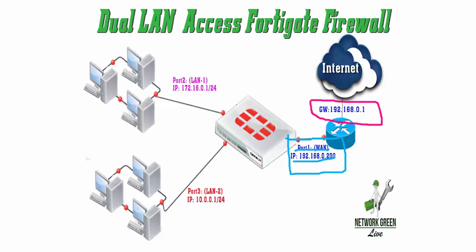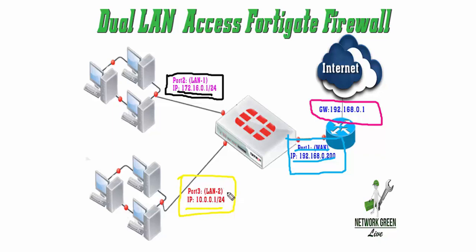On port 2 we have LAN 1 configured — that's the IP 172.16.0.1/24. On port 3 we have LAN 2, IP is 10.0.0.1/24. We have LAN 1 and LAN 2, and we have to create a policy.